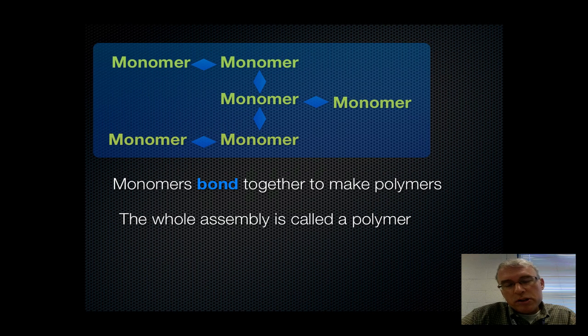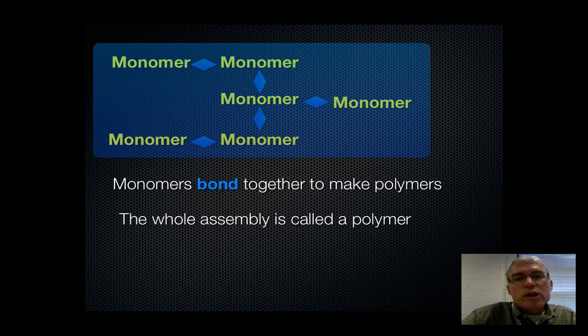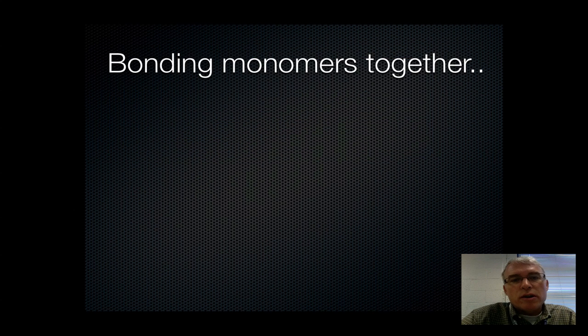Depending on the monomers that you put together, you can build different categories of polymers, such as proteins, carbohydrates, lipids, and nucleic acids. So we're going to explore each one of these in turn.